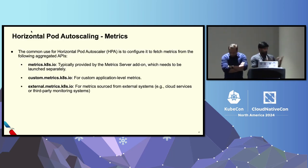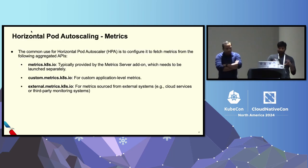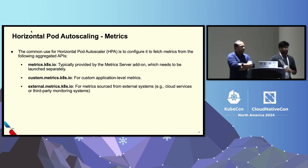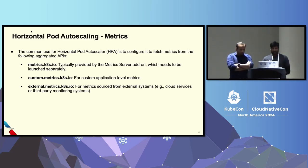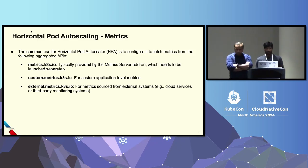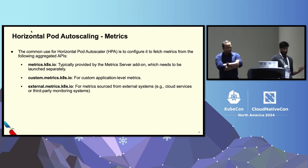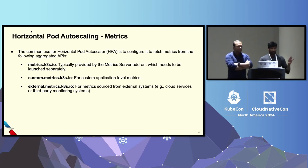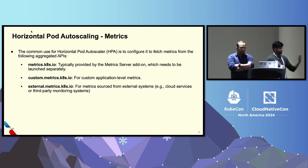HPA fetches metrics from aggregated APIs. There are three different APIs: metrics.k8s.io, custom.metrics.k8s.io, and external metrics. The metrics.k8s.io is the typical metrics server add-on which needs to be launched separately. Custom metrics is for application-level metrics, and external metrics is for external systems like monitoring tools, cloud services, or third-party systems.